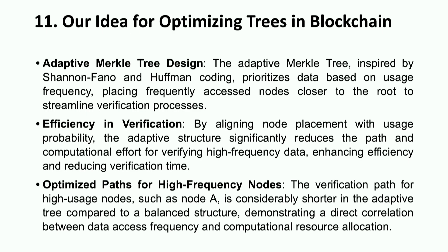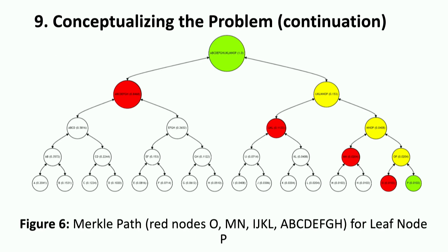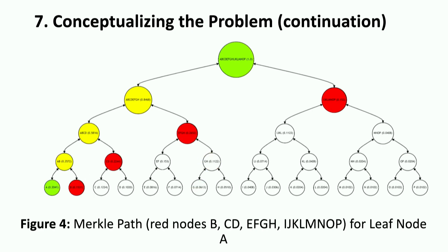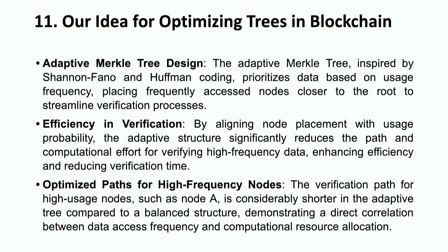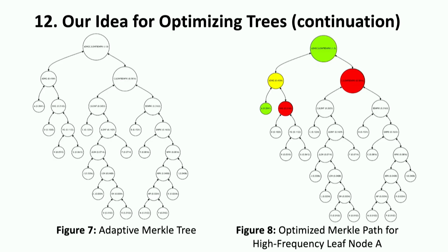The verification path for high-usage nodes, such as node A, is considerably shorter in the adaptive tree compared to the balanced structure, demonstrating a direct correlation between data access frequency and computational resource allocation. For node A, which is a high-frequency use node, we can restructure it to be positioned higher toward the top of the tree, thus reducing the amount of hashing required to access the node.